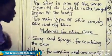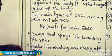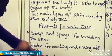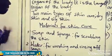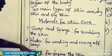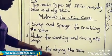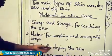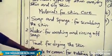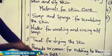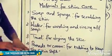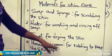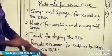You use water to wash off the soap from your body. When you want to have your bath, you use your soap and your sponge, scrub your skin very well, then use clean water to rinse off the soap from the body. Then you use your towel for drying the skin. After drying, you use your pomade or cream to rub the skin to keep it soft.